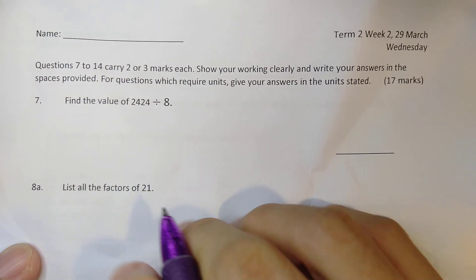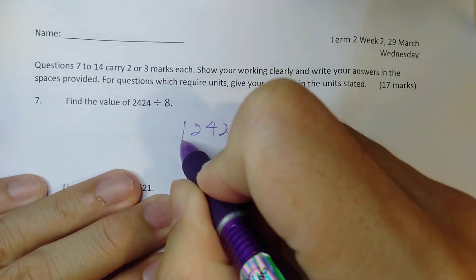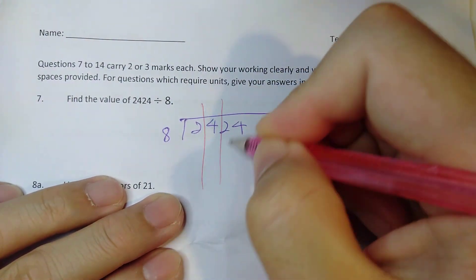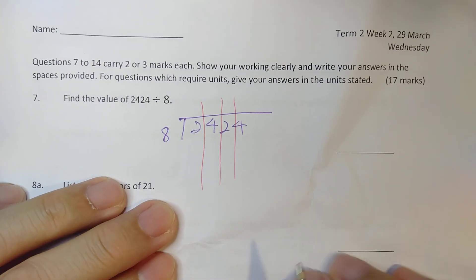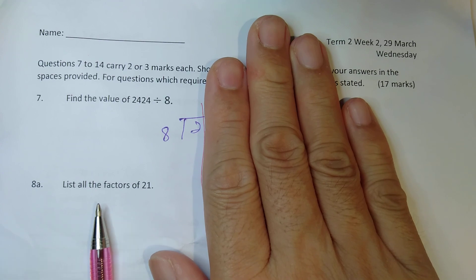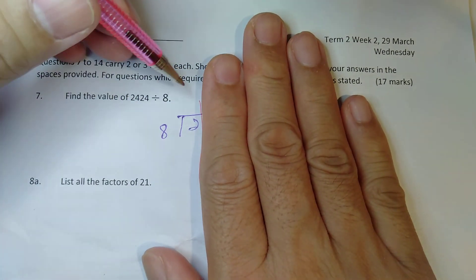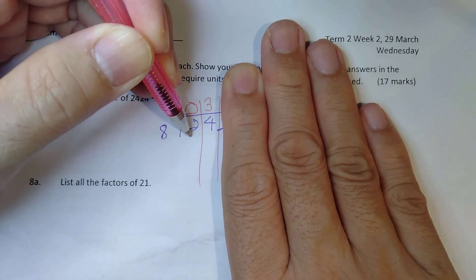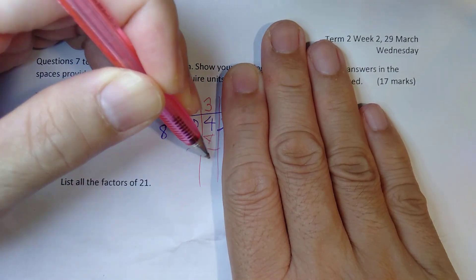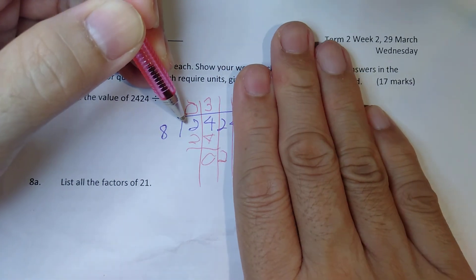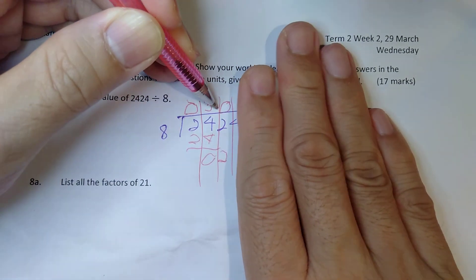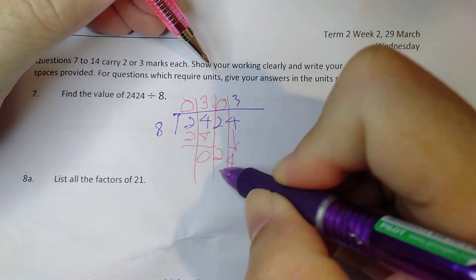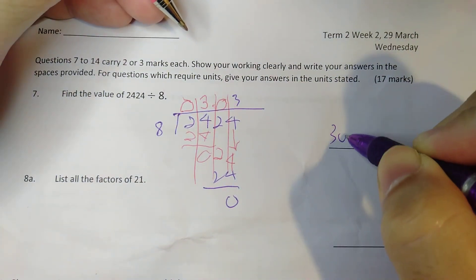Question 7 now. Find the value of 2,424 divided by 8. I always advise my students, please draw lines if you are not very familiar. Don't be lazy. Now, so if you look at this, 2, right? This is too small. I can't do any division here. So add a 0. Now I see 24. So 8 times 3 is 24. I subtract this, I get 0. I bring 2 down. 2, too small. So I put 0. Next one, I bring 4 down. Then 8 times 3 is 24. So answer is 303.